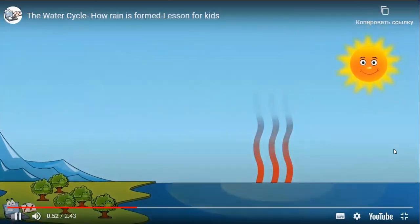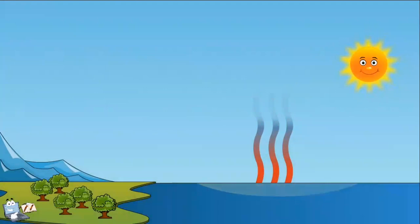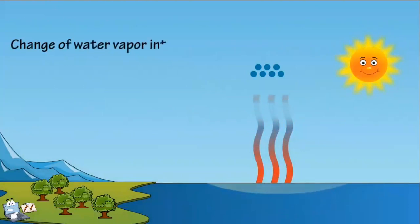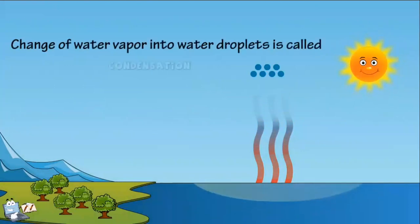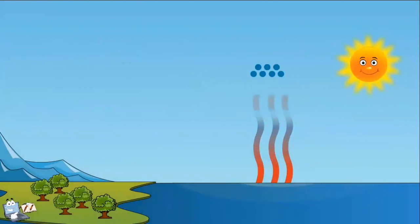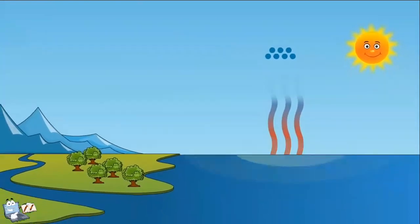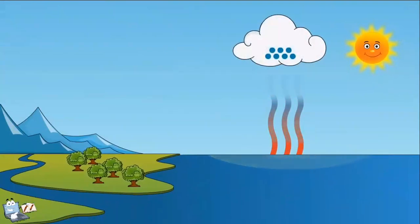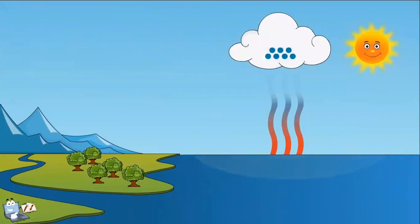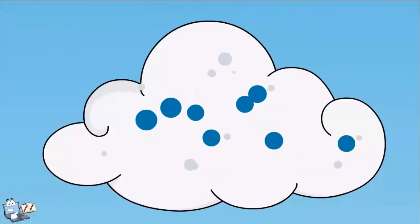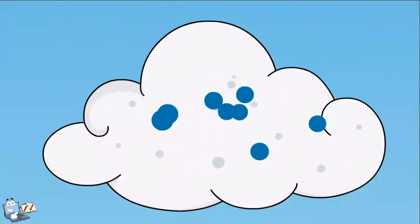So, in the sky, the water vapor cools and changes back into tiny water droplets. This change of water vapor into water droplets is called condensation, and it's the opposite of evaporation. Clouds are made up of tiny water droplets, so when condensation occurs in the sky, clouds form and grow. Let's see it from a closer perspective — the droplets bang together and form even bigger drops.